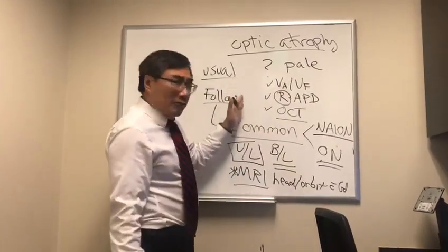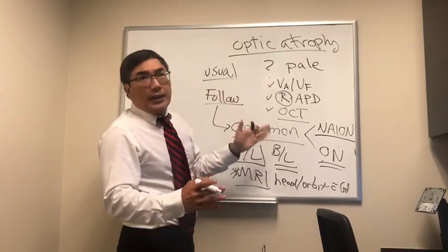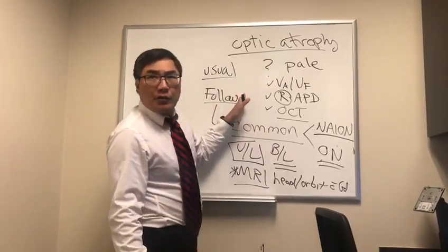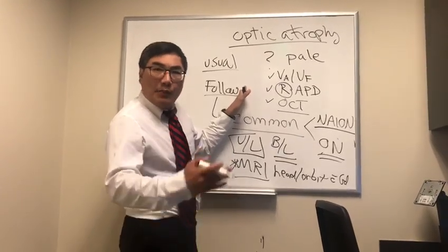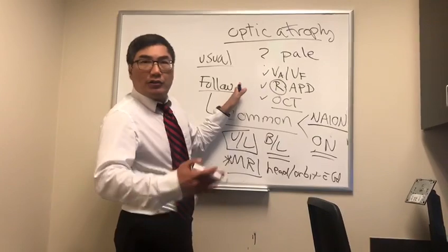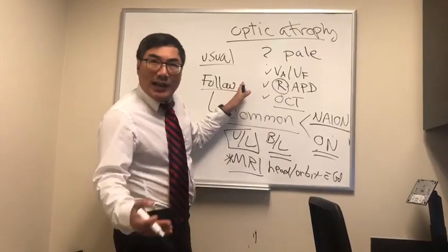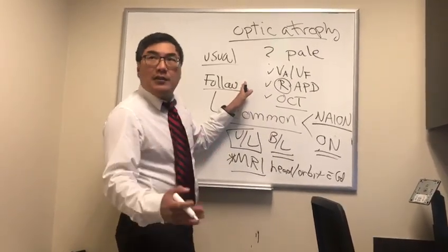However, if it continues to progress, then you have to do more. And if you're getting to this point, you probably should refer to neuro-ophthalmology before proceeding to tertiary testing like NMO and MOG and autosomal dominant optic atrophy and paraneoplastic. These things are probably best left to the experts.